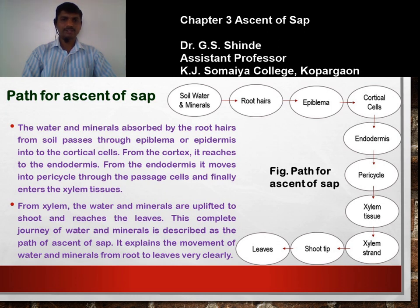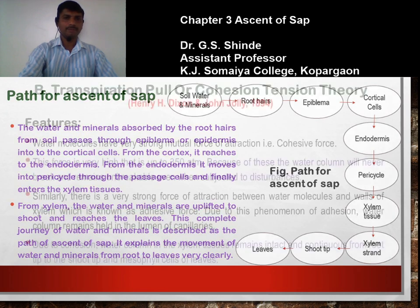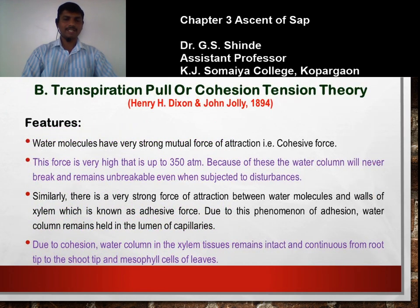From the cortex, water reaches the endodermis, and from the endodermis it moves into the pericycle through the passage cells, and finally enters the xylem tissue. Through this xylem, water and minerals are uplifted to the shoot and reach the leaves. This complete journey of water and minerals is described as the path of ascent of sap.